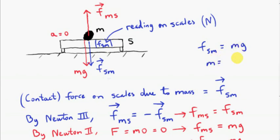So m is just obtained by taking the reading in newtons and dividing by 9.81 to convert the reading to kilograms, which is actually mass, but in everyday usage, it's confusing. Weight is referred to as being in kilograms, not newtons.